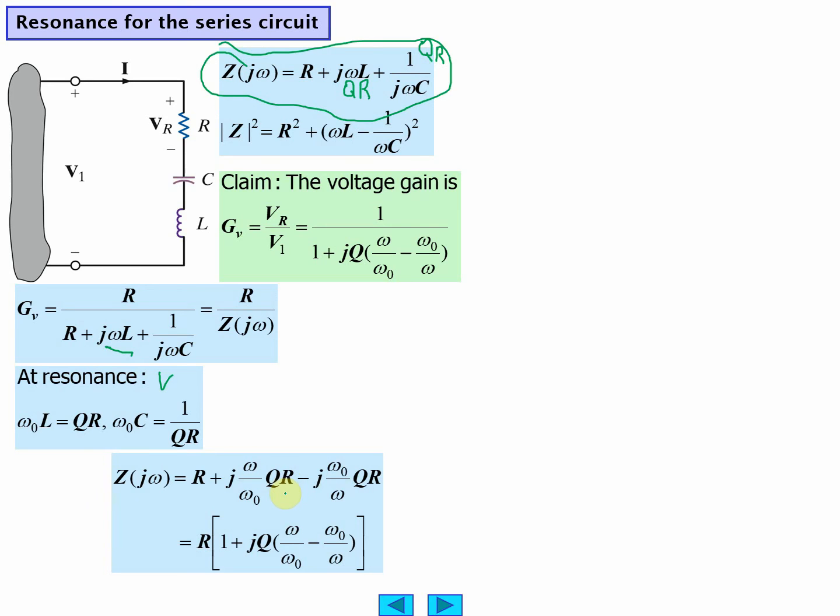We can write omega over this multiplier term. Now QR, it's going to be omega naught L, so omega over omega naught times omega naught L is going to give us omega L. And omega naught over omega times QR, QR is omega naught C at resonance.